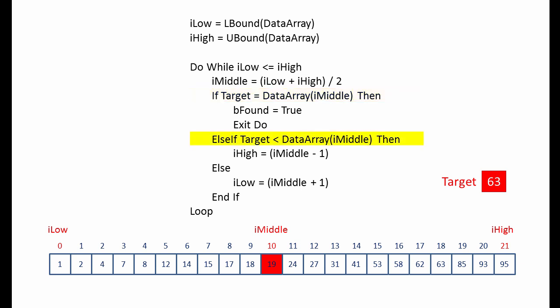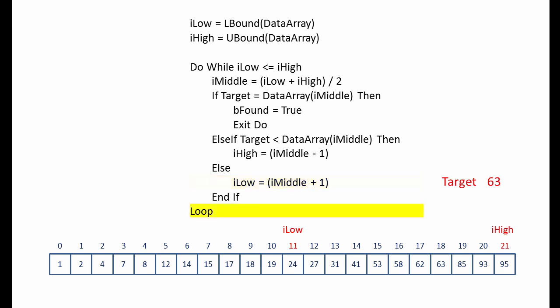If the answer is no, we ask: is the target less than the middle value? In this case the answer is no. So we're going to effectively discard the lower half of the list, and we do this by simply redefining the low pointer. The low pointer is now where the middle was, plus one. And then we continue back to the top of the loop.